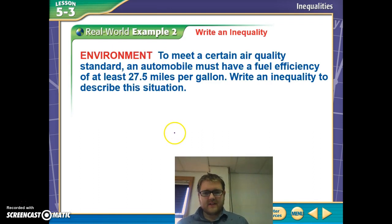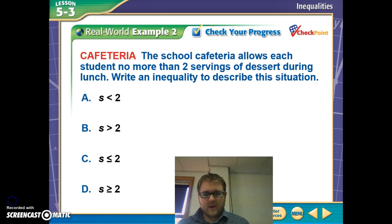So here we have: to meet a certain air quality standard, an automobile must have a fuel efficiency of at least 27.5 miles per gallon. That means 27.5 is our lowest number. We have to be above that. Write an inequality to describe this situation. Well, we could call fuel efficiency E. We could say E has to be greater than or equal to 27.5 miles per gallon. So you see, since it was the least number, we said that efficiency has to be greater than or equal to it. So go ahead and check your understanding with this question.